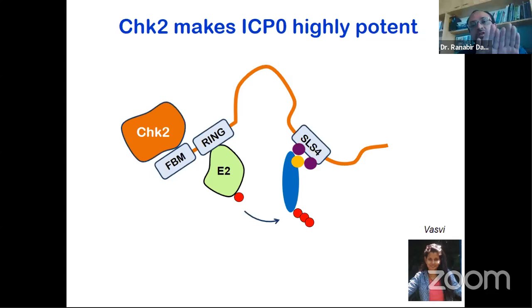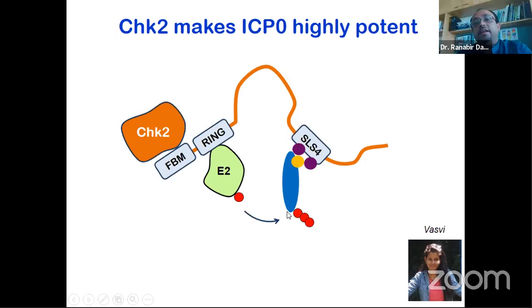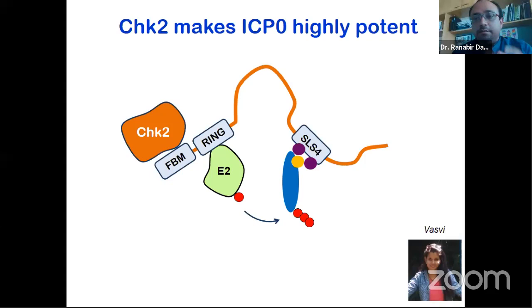We also showed that there is another region away from the ring domain that binds to a human kinase called CHET2. This causes phosphorylation in the region where SUMO is supposed to bind, making the binding much stronger — like stapling two papers with three staples instead of one so they can't be separated. When these 'staples' are made, ubiquitin chain formation is much more rapid and quicker, making ICP0 a much more potent ubiquitin ligase. ICP0 has to work fast — it cannot allow the viral DNA to be stuck inside the protein cage for long, because other immune responses from the human cell will kick in and eradicate the virus.